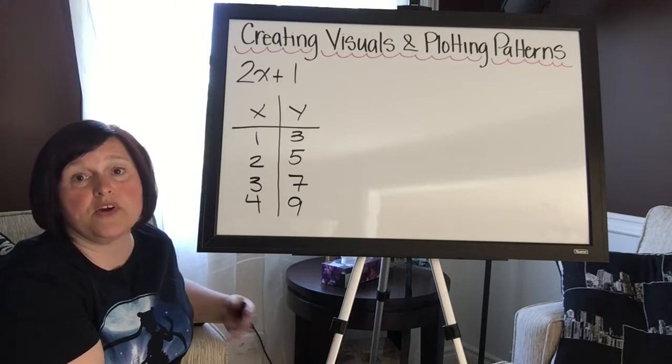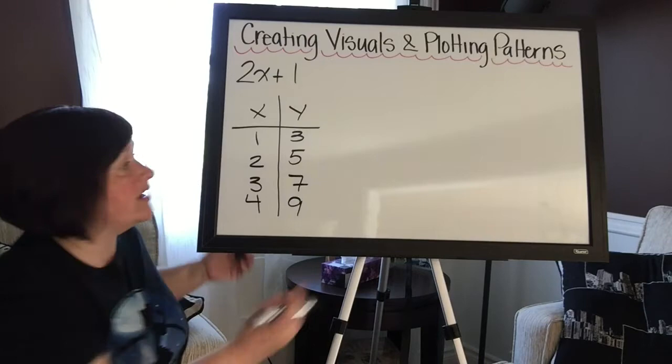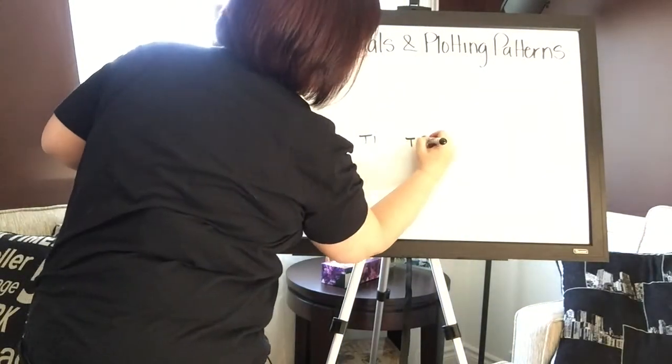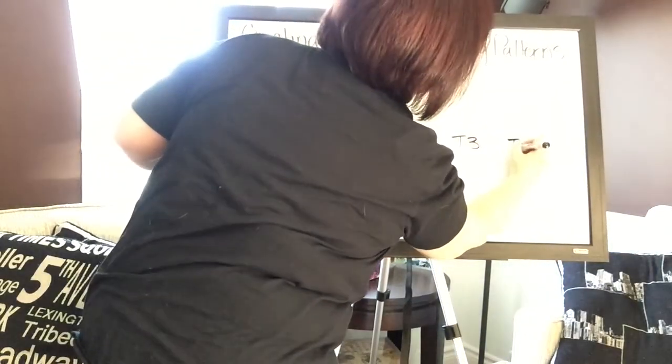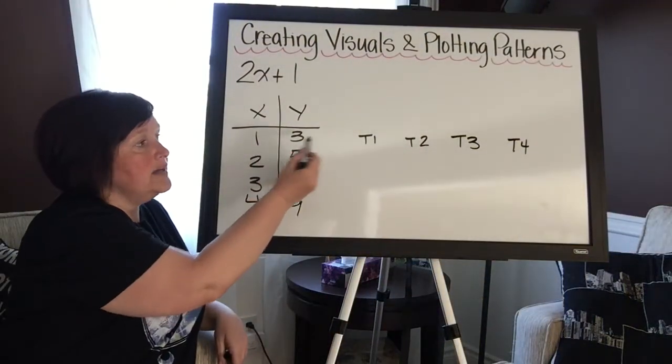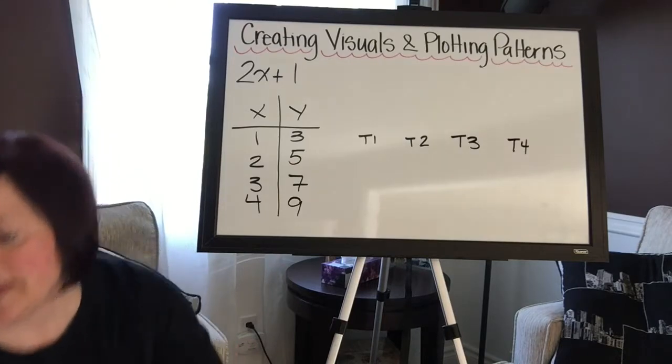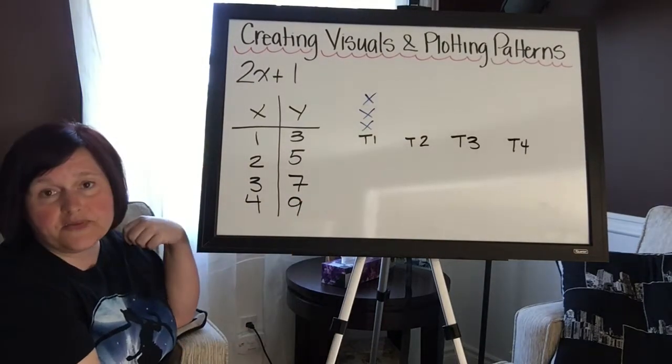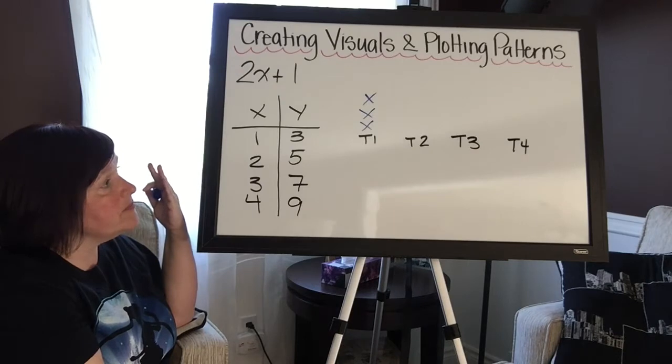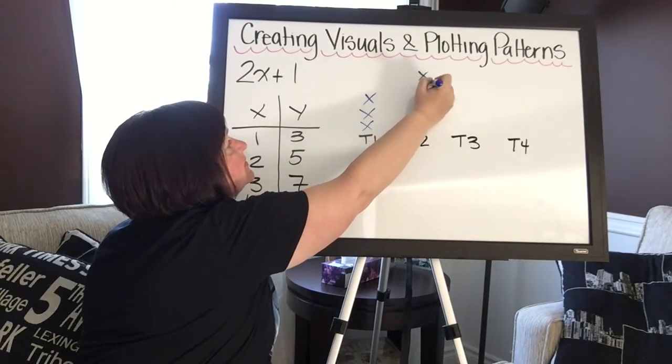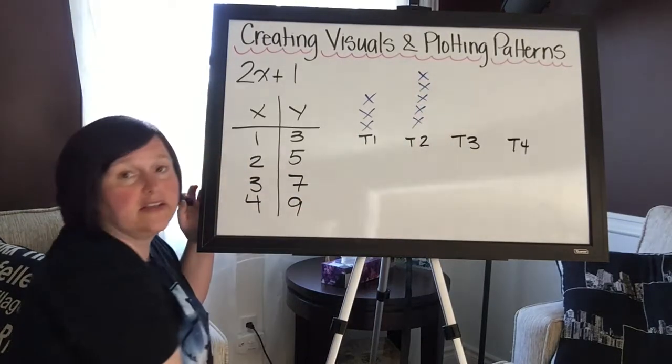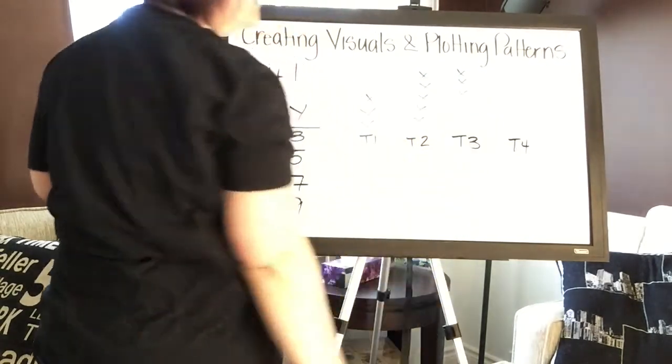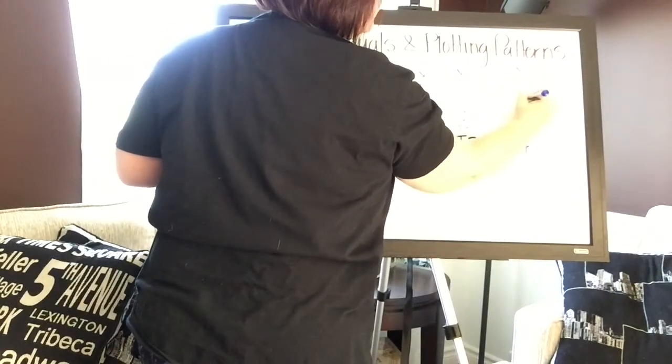So the first thing I'll do is I'll write down my term numbers. So I've got term number one or figure number one, term two, term three, and term four. Okay, now in term number one I have to have three shapes, so it could be as easy as doing something like this: one, two, three. There is figure number one. Okay, and then in term number two, obviously it's going to be one, two, three, four, five.